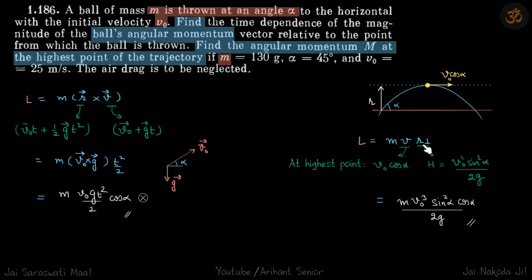So here r perpendicular indicates that you just extend the velocity from that point where it is and then on that line you draw a perpendicular from the position from which you want to calculate the angular momentum. So this is r perpendicular on velocity.